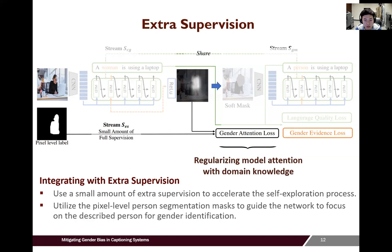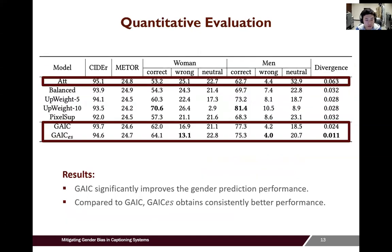The model trained with extra supervision is denoted as GAIC-ES. Results show that the GAIC model significantly improves gender prediction performance. Compared to the baseline model, gender accuracy for women increased from 53% to 62%, and its error rate reduced from 25% to 16%. GAIC-ES, which is trained with extra supervision, obtains consistently better performance.